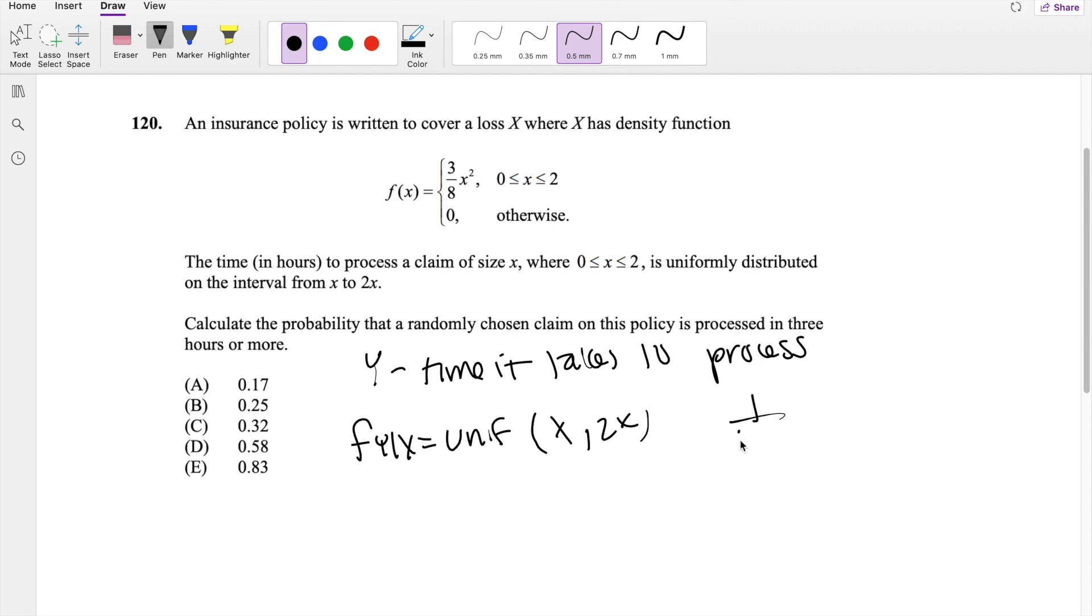So that means for uniform distribution, we know that to be equal to 1 over b minus a, where a is the lower limit and b is the upper limit. So then for this one, this is equal to 2x minus x, which is equal to 1 over x.